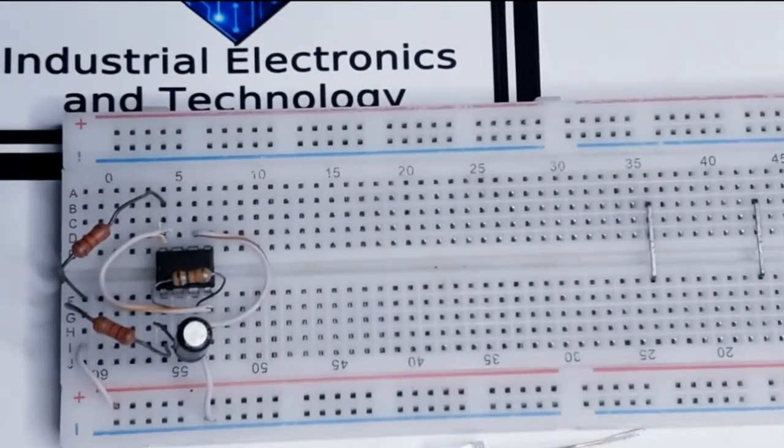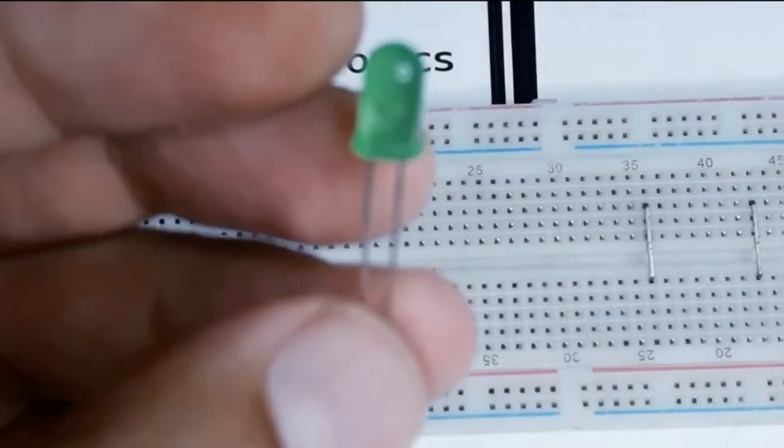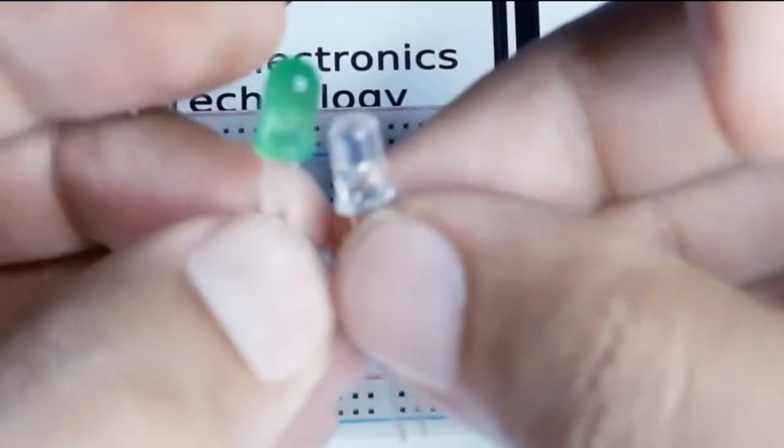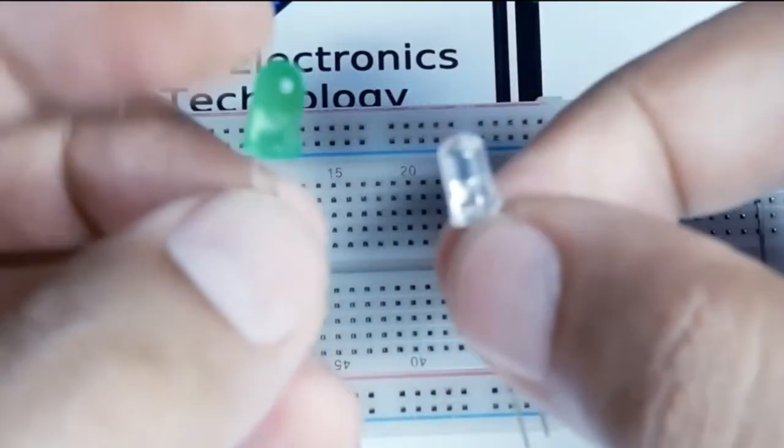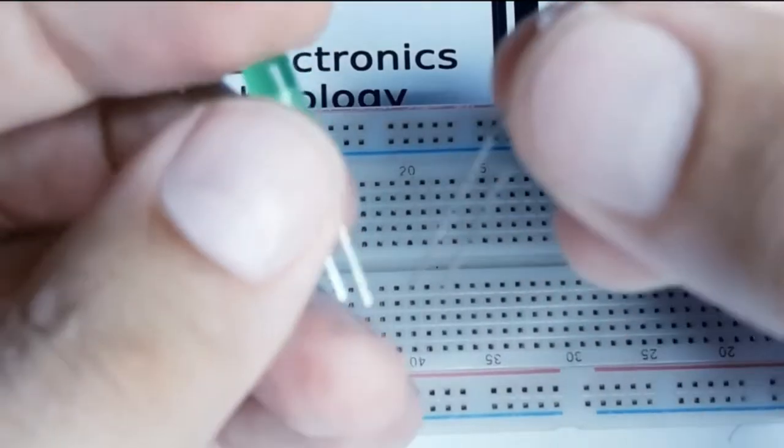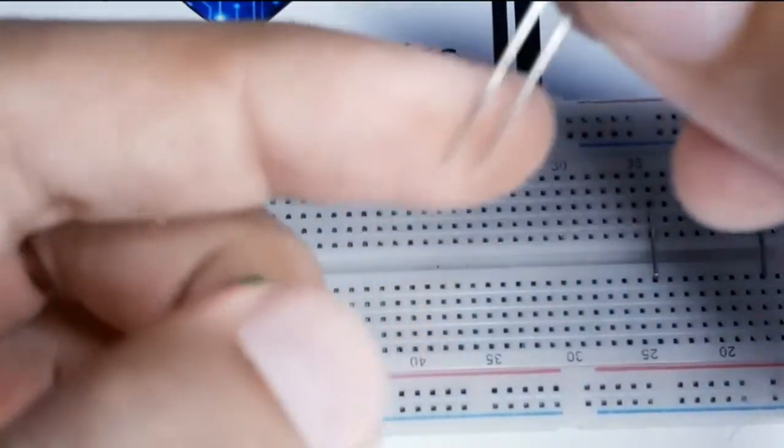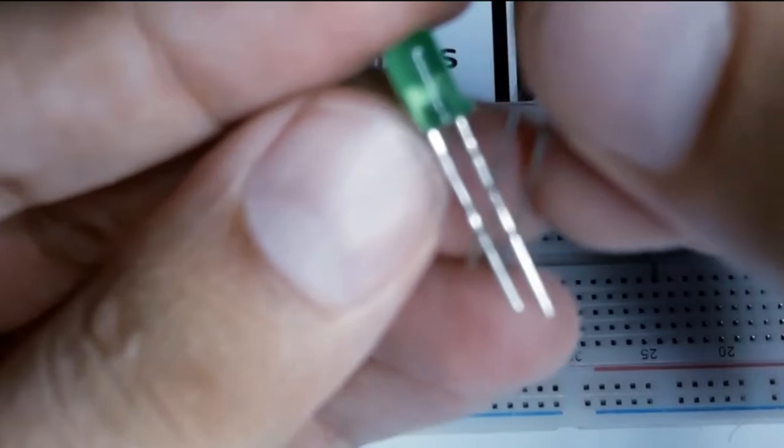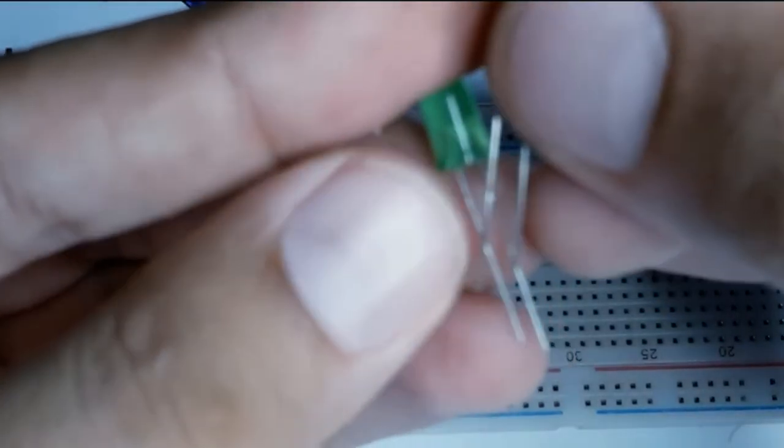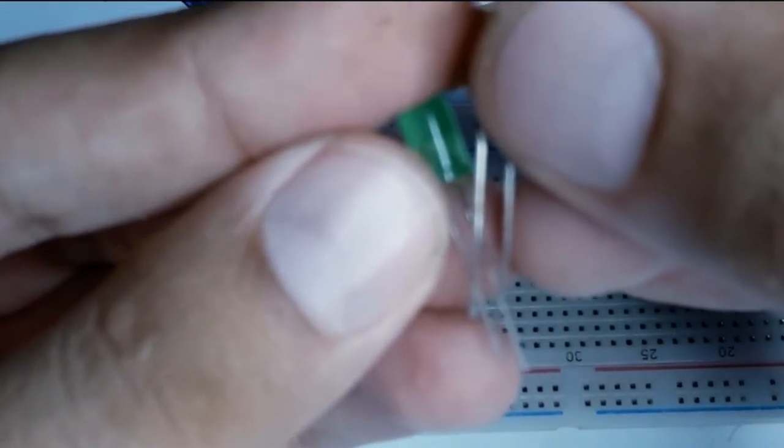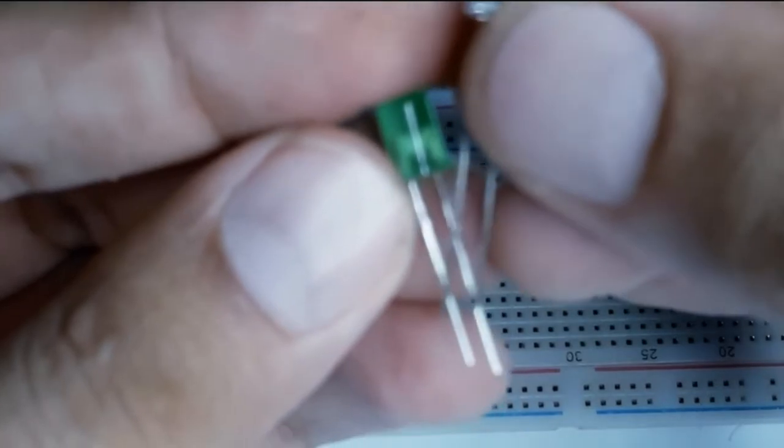I have these two LEDs - one is red and one is green. I have to attach the positive pin of the red LED with the negative pin of the green LED like this. In this way, I have to make three or four or however many I want to make.